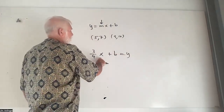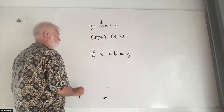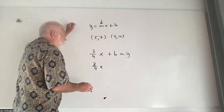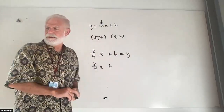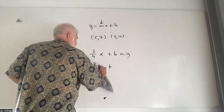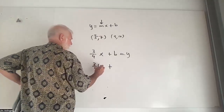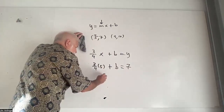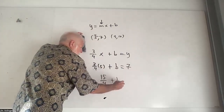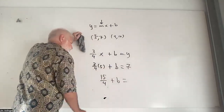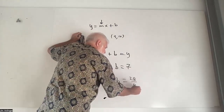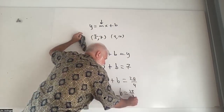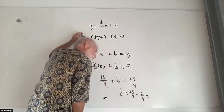Then we have an X and a Y, and that allows us to solve for B. So three-fourths times X — X meaning something in Arabic, which we'll talk about in class. I'm giving you an X value, a horizontal value of 5. I don't know B yet, but I do know the Y value produced is 7. So I've got 15 fourths plus B. I'll turn 7 into fourths, which is 28 fourths. So B equals 28 fourths minus 15 fourths, which equals 13 fourths.